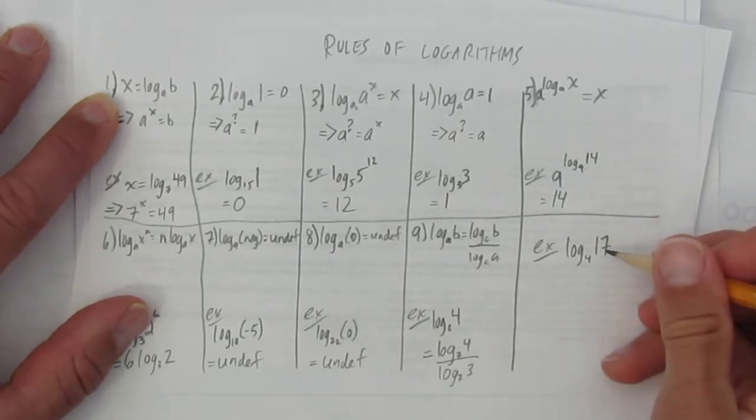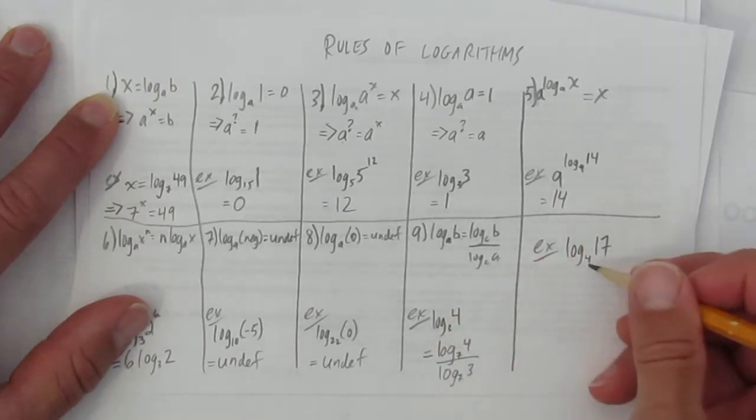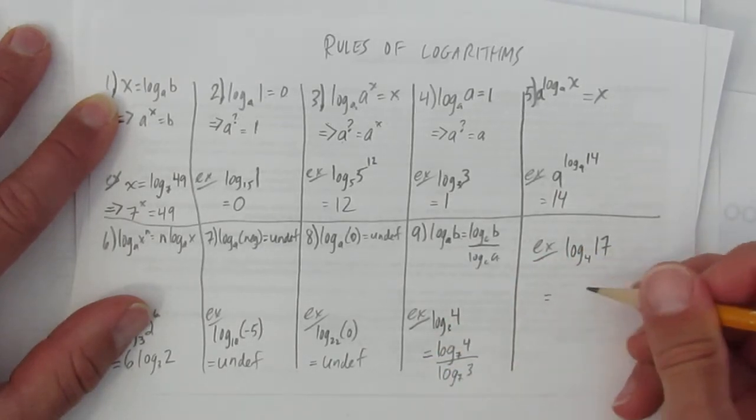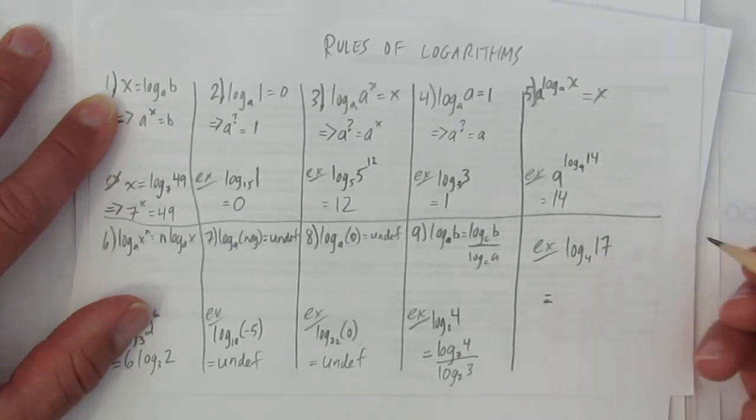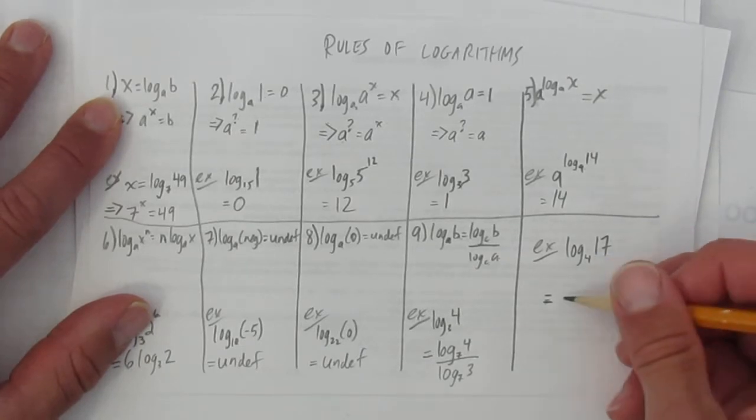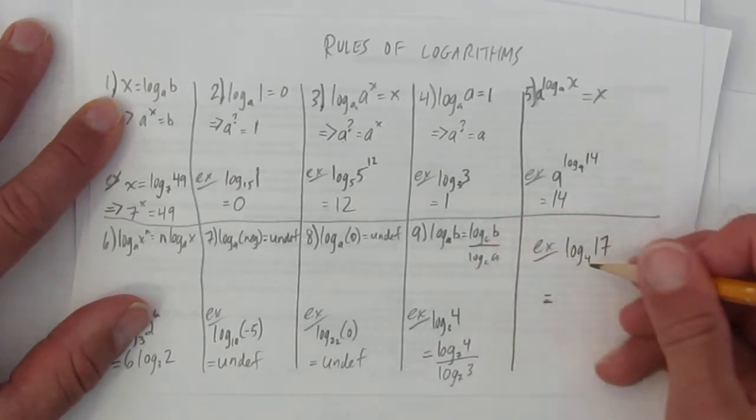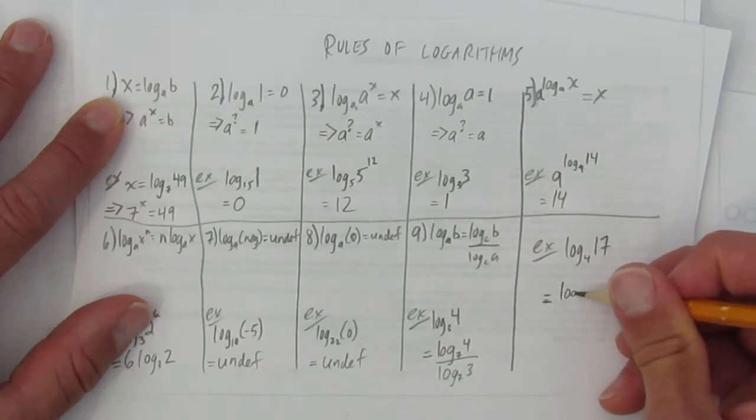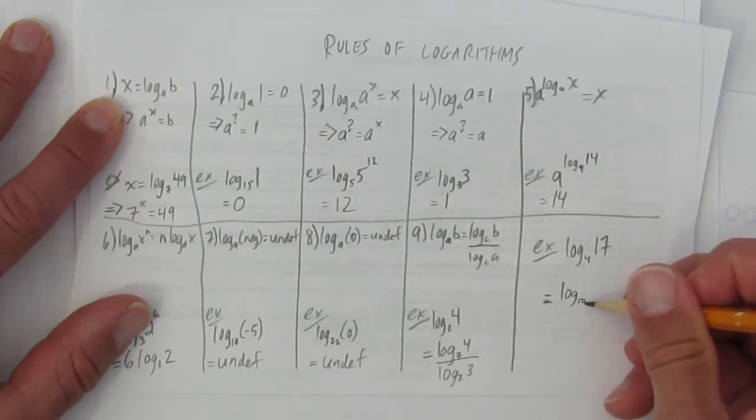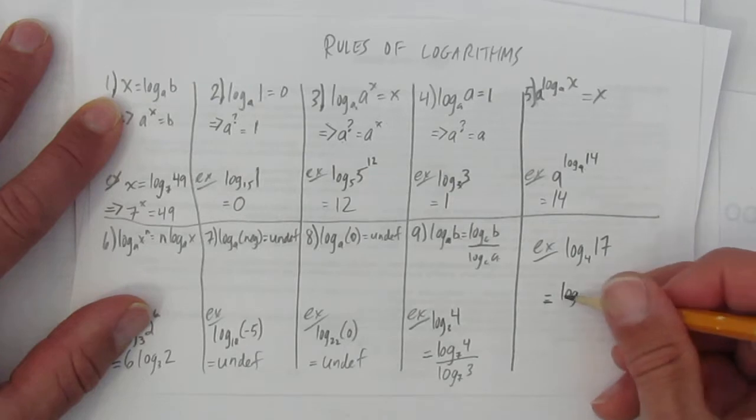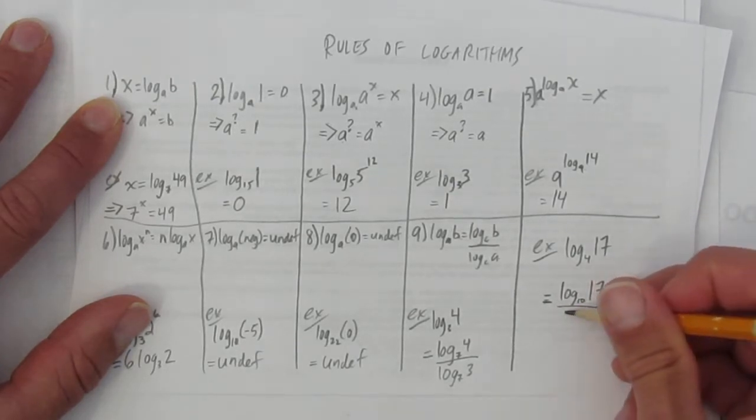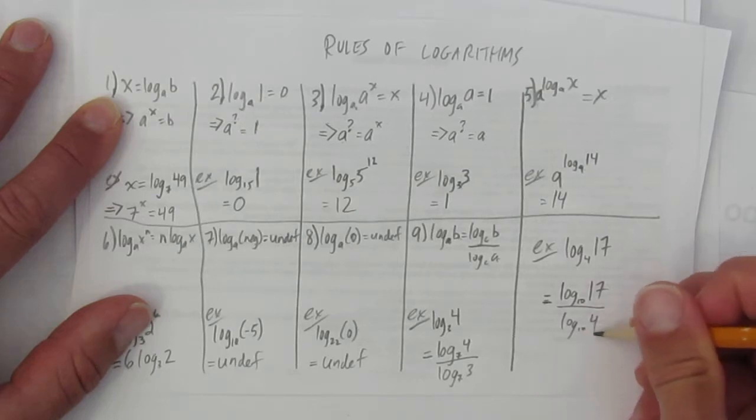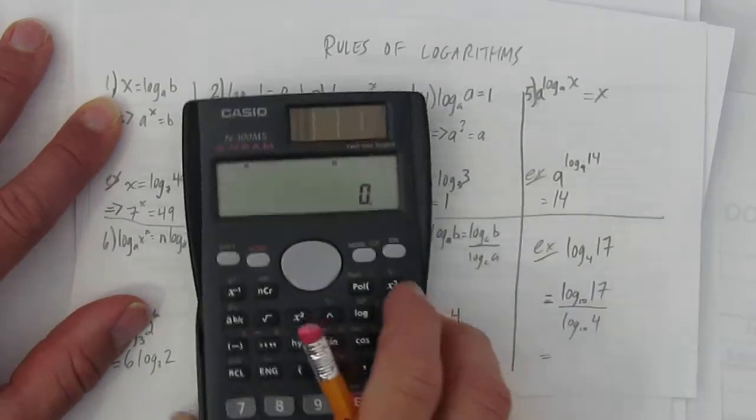So why is that useful? I'm going to do another example. This is log base 4 of 17. On your calculator, you have a log button. And that log button is base 10. So the best part about rule 9 is it allows you to use your calculator to solve it. This is hard to do by hand. Really hard. But easy with a calculator. You just change it using rule 9. This is the same as log base 10. Why did I pick base 10? Because that's what the calculator button is, base 10. So log base 10 of 17 over log base 10 of 4. And now I can calculate that using my calculator.